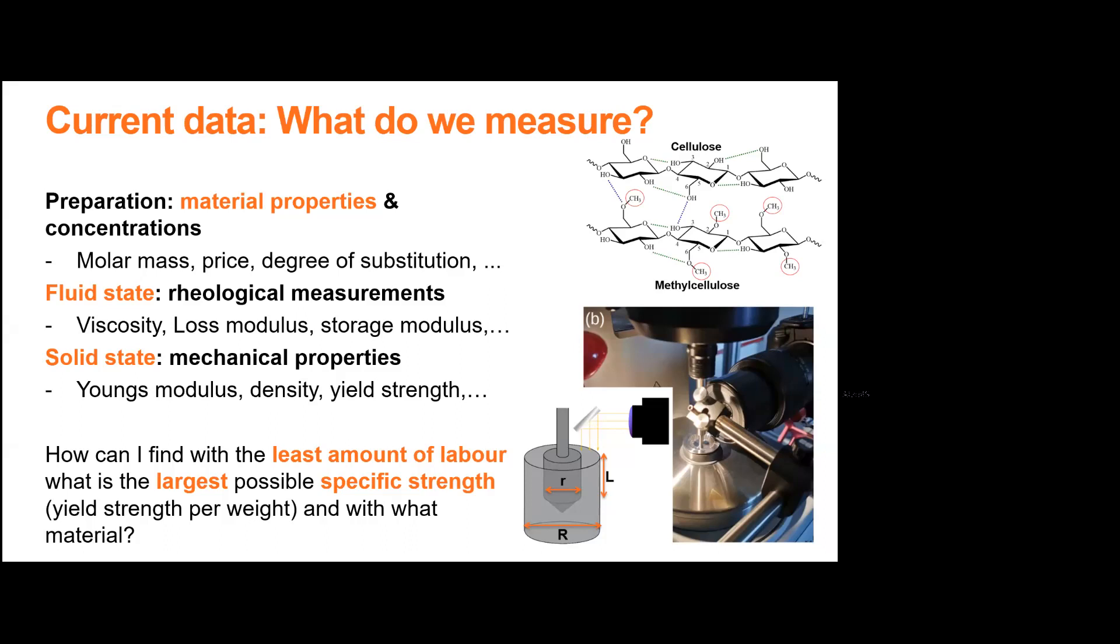And what do we actually measure? So we have a preparation stage where there are material properties like mass of the particles, molar mass. Then we can put some weird parameters like price or degree of substitution. Basically how pure is the material, it rises the price, but it makes it more efficient to make the foam. Then when we make a suspension out of it, it goes into fluid state. So we have rheological measurements. Basically now I have a fluid in a cup, I put the piston in the center and rotate and measure the force. I get measurables like viscosity, loss modulus, storage modulus. And then I dry the foam. I go into the solid state when I have mechanical properties like Young's modulus, density, yield strength and so forth.